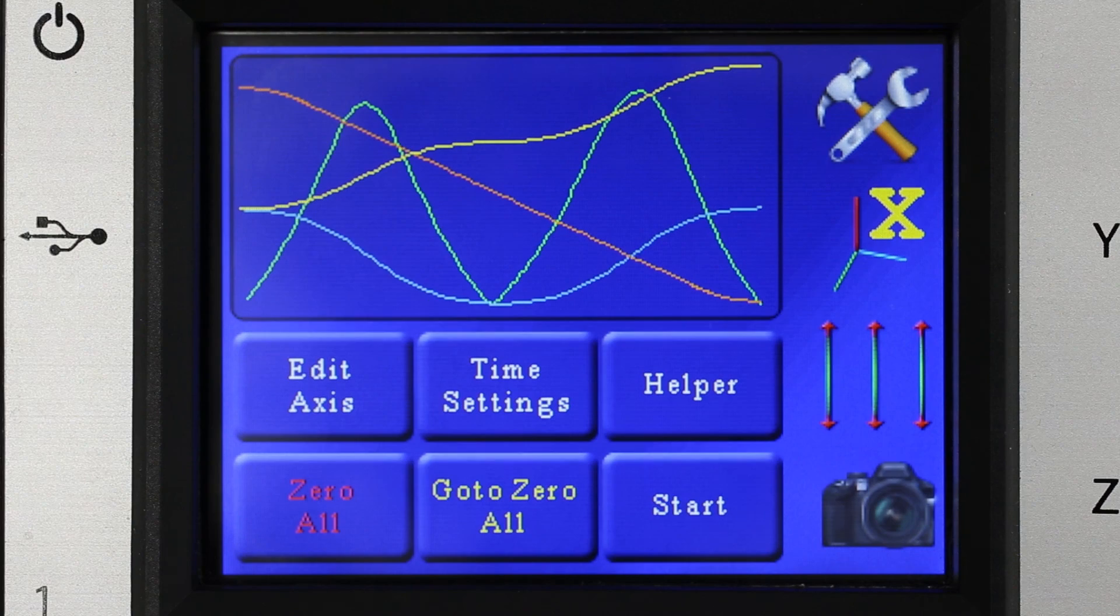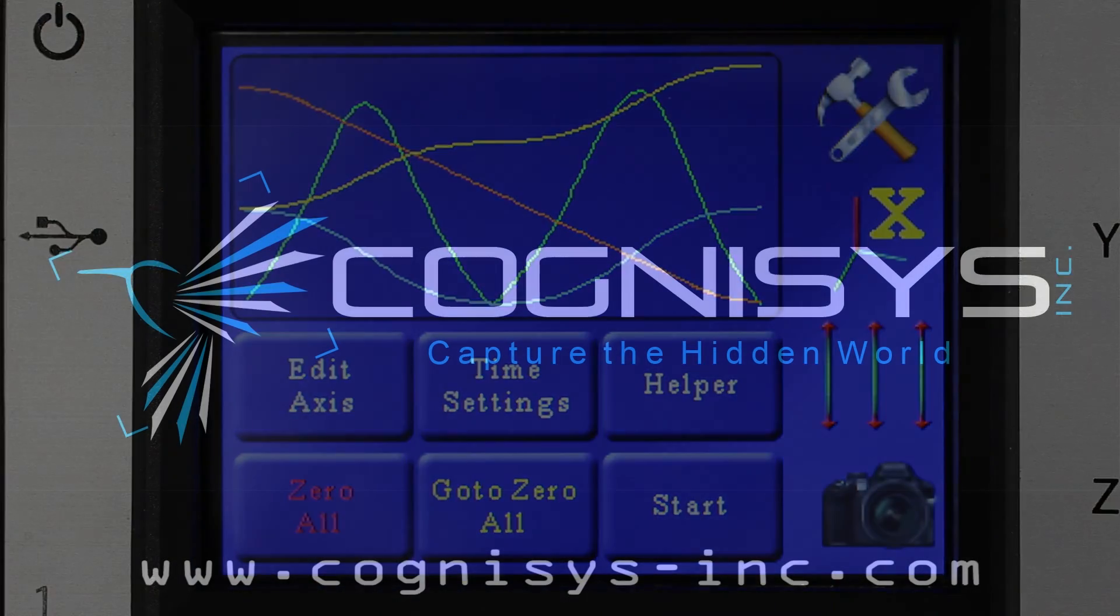And that's a basic overview of adding and editing keyframes with the Stackshot 3X controller. If you have additional questions feel free to read our owner's manual. There's additional details in there. Thank you for watching.